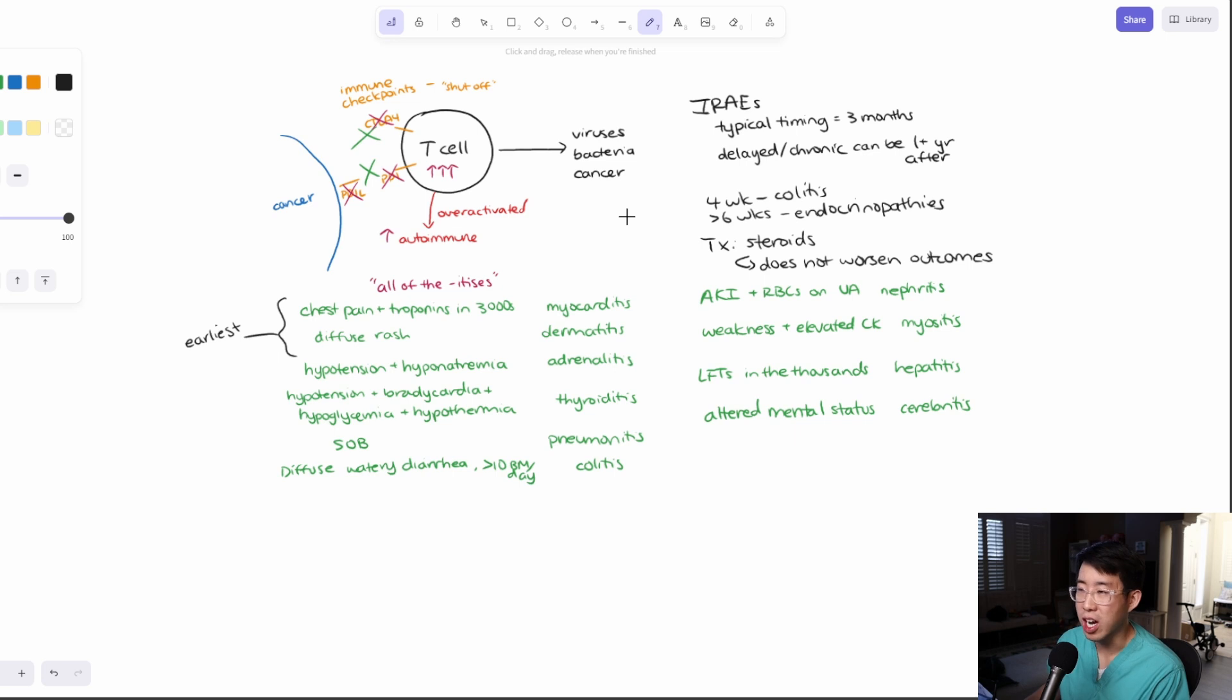All right. And then finally, I want to just talk to you a little bit about some of the medications that are out there or the immune checkpoint inhibitors that are out there. So your anti-CTLA-4, that one is going to be ipilimumab. This is typically used for melanoma or renal cell carcinoma. For anti-PD-1, you have nivolumab and pembrolizumab, which you may see pretty commonly. That is going to be for conditions like melanoma, lymphoma, and non-small cell lung cancer.